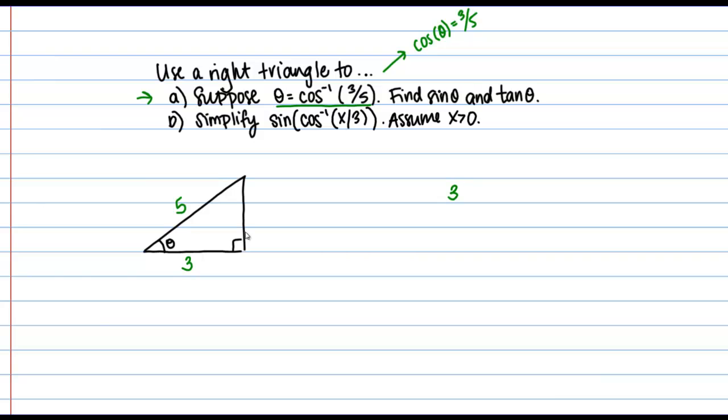I should have 3 squared plus B squared, where B is this side here, equals 5 squared. So if I work that all out I'm going to get that B equals 4, which if you are familiar with 3, 4, 5 right triangles you might have already guessed that.